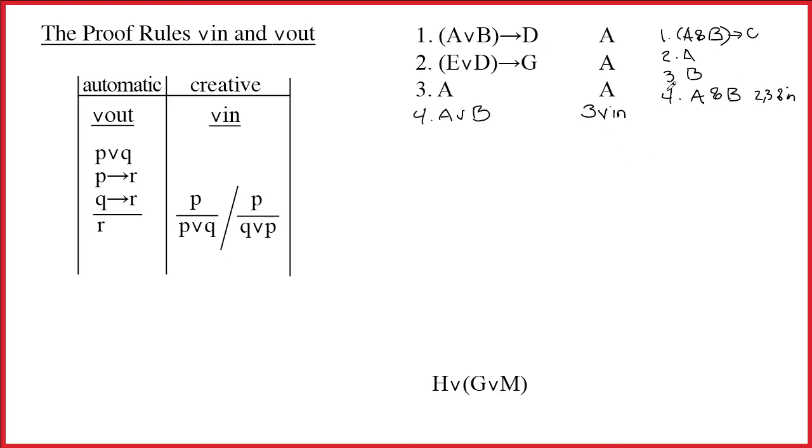Okay, well, fantastic. You should never do a creative rule unless you know exactly why you're doing it, but we know why we did this. Because we look at line 1, and now we can do the arrow out. If you have A or B on another line by itself, and we do, then you can write D. So we shall. And the justification, of course, is going to be 1, 4, arrow out.